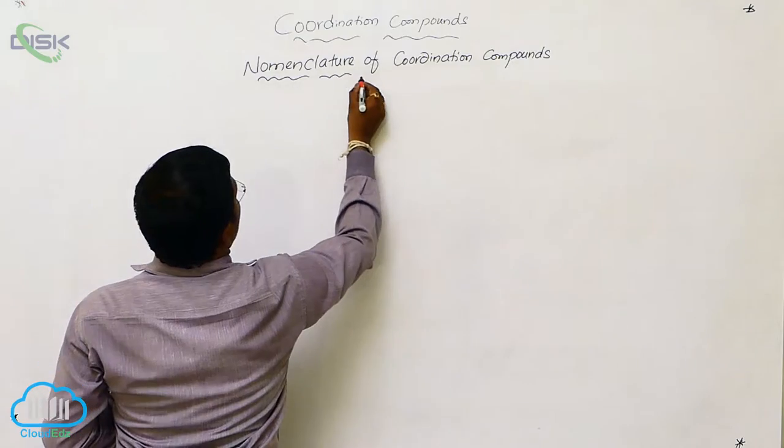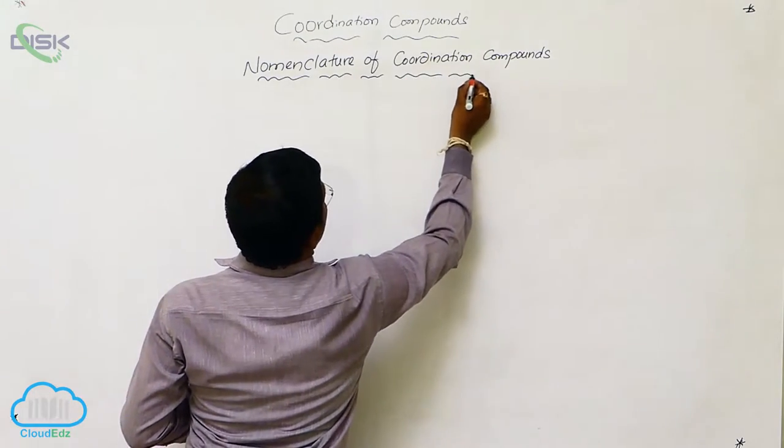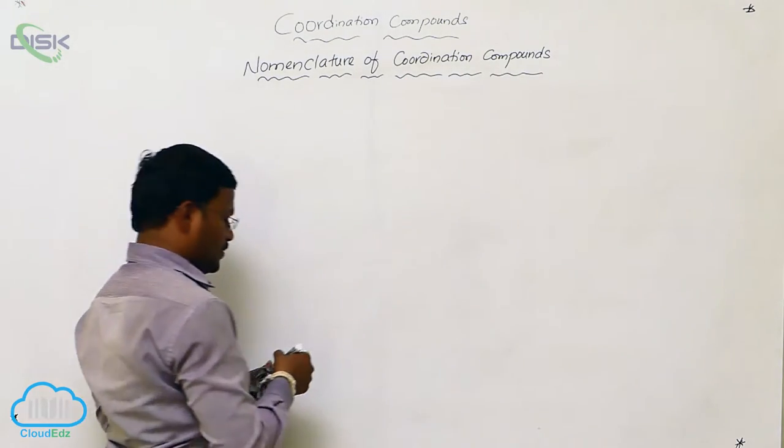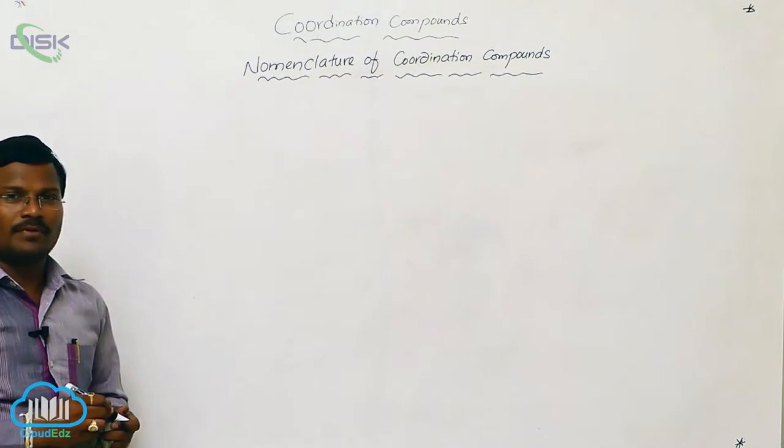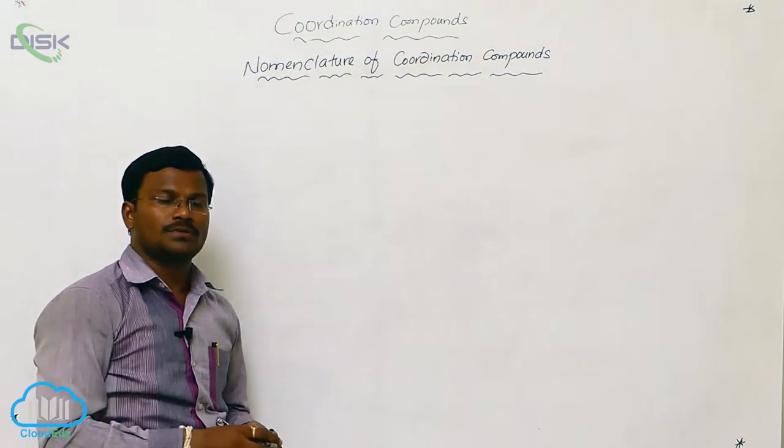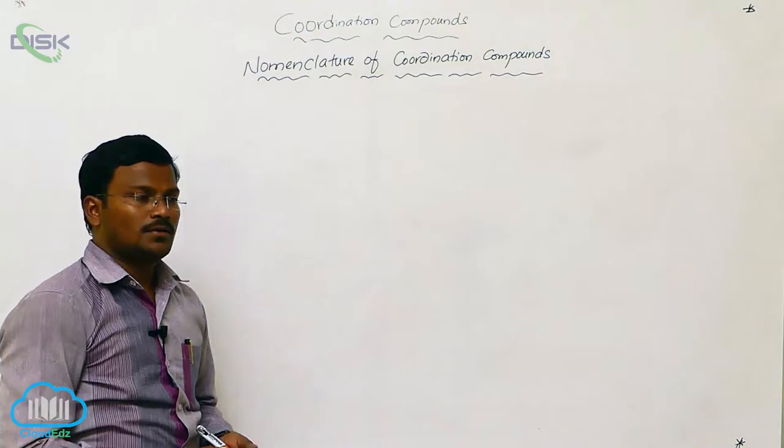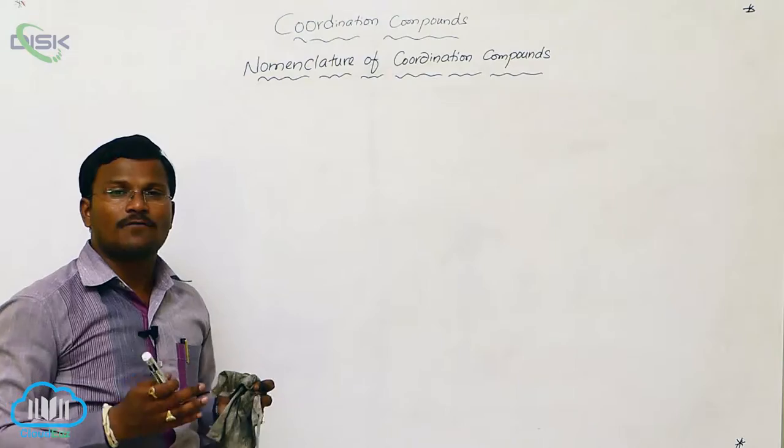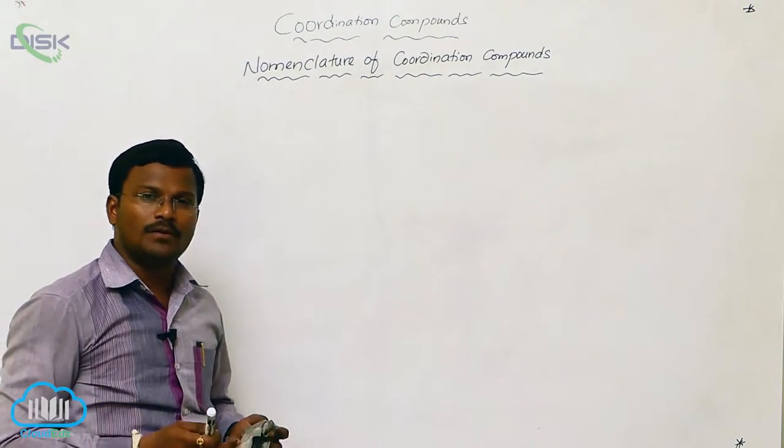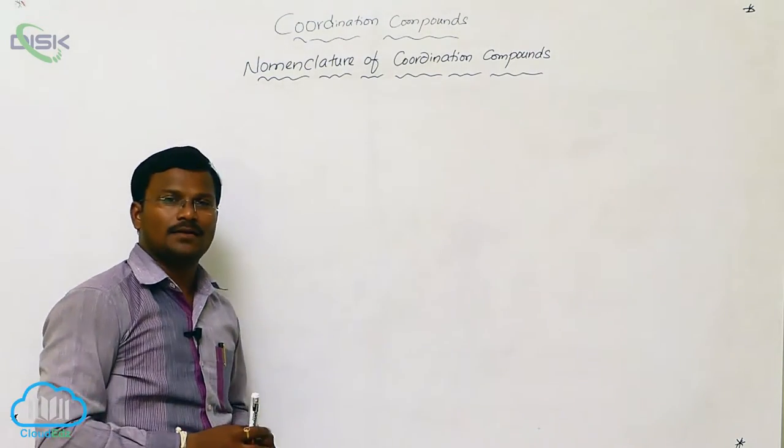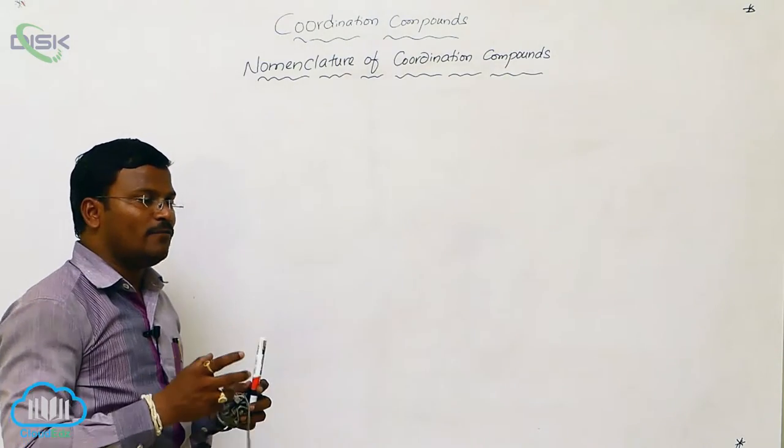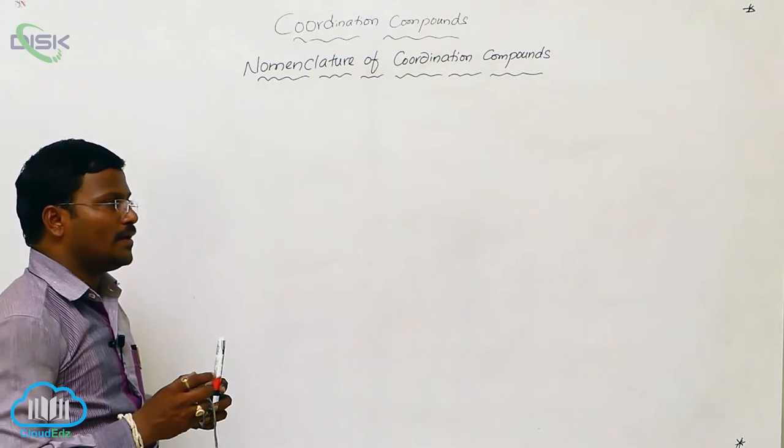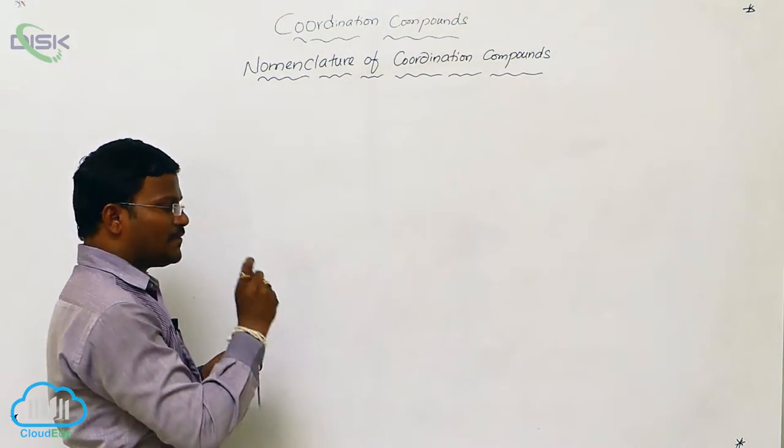Here it is most important to give a systematic name for coordination compounds. As we know, a wide variety—thousands and lakhs—of coordination compounds are available in organic chemistry, and each compound will have a specified name.